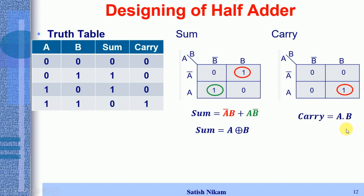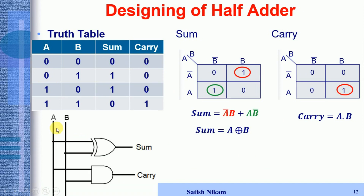Now that we have the boolean expressions, the last step in designing the combinational circuit is to draw the logical diagram. With inputs A and B, to get the output Sum we use an XOR gate: A XOR B gives us Sum. To get the Carry, since the expression is A·B, we use an AND gate for A and B, which gives us the Carry output.